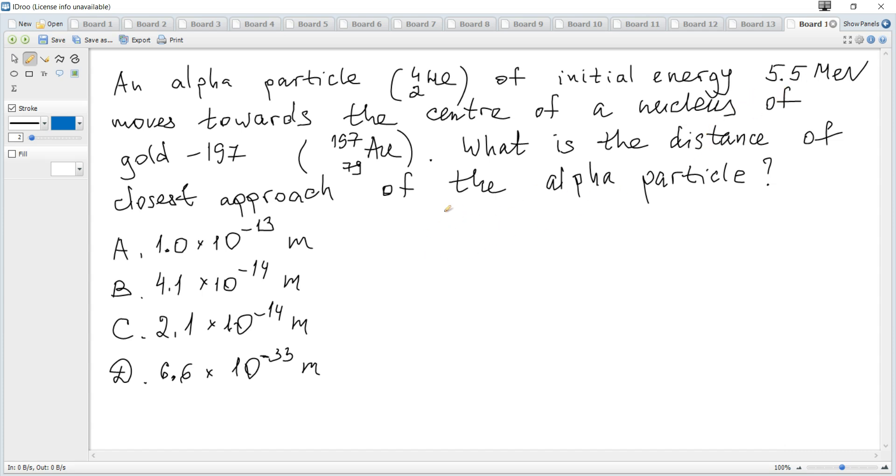Energy of an alpha particle is 5.5, but it's in mega electron volts, so we convert it to joules. It becomes 10 to the power of 6 due to this mega, and electron volts we multiply by elementary charge.